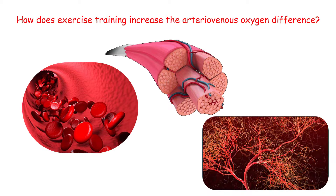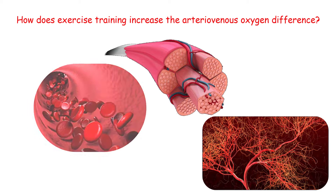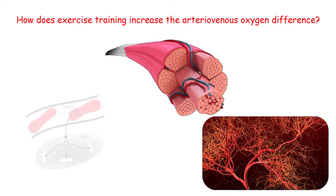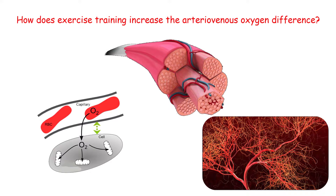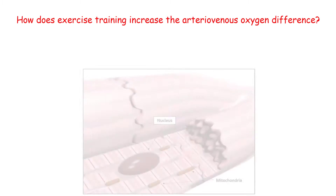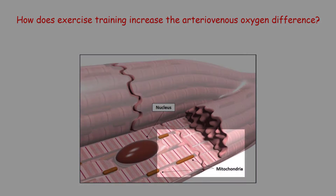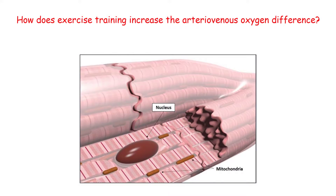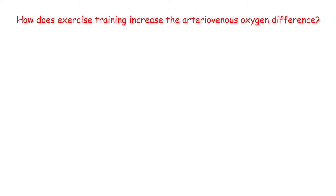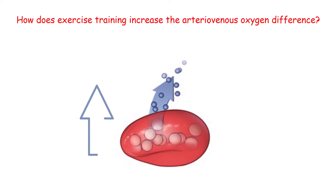The increase in blood vessels surrounding the muscle cell also allows blood to move more slowly, increasing the amount of time for oxygen to diffuse out of the blood and into the cells. Additionally, the increased number of capillaries decreases the diffusion distance the oxygen must travel to reach the cells. Lastly, there is an increase in mitochondria in the muscle cells after exercise training, which leads to a decrease in oxygen content in the cell, increasing the concentration gradient between blood and cell oxygen levels.